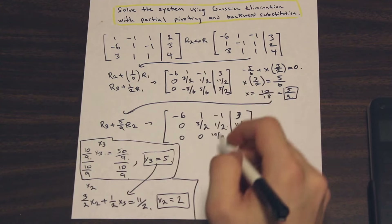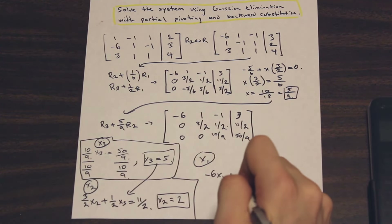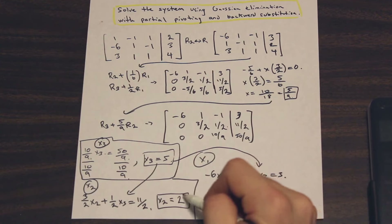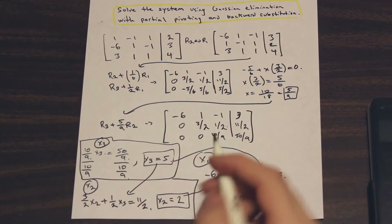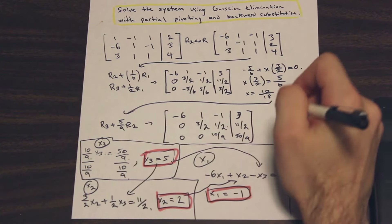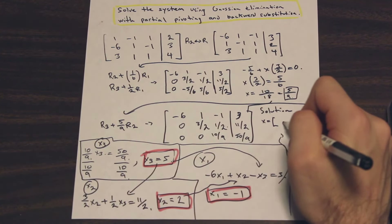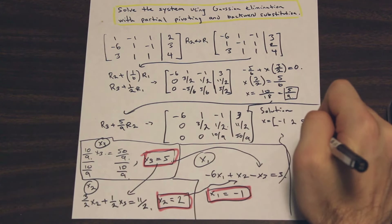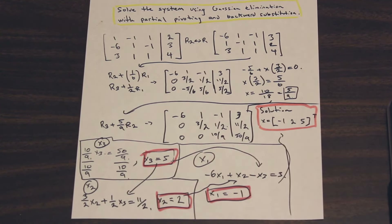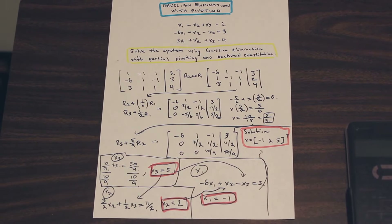For x1, using the first row: negative 6x1 plus x2 minus x3 equals 3. Plugging in x2 equals 2 and x3 equals 5 and solving, x1 equals negative 1. So the solution to the system is x equals the vector negative 1, 2, 5 transposed. That's it — pretty much free marks on your midterm if you can remember this process. Make sure you don't make any mistakes with the absolute value step. Thanks for watching.